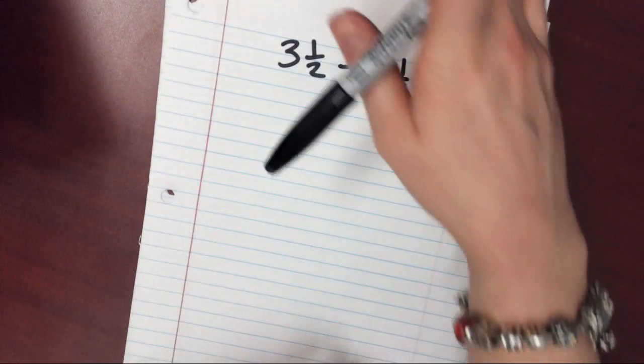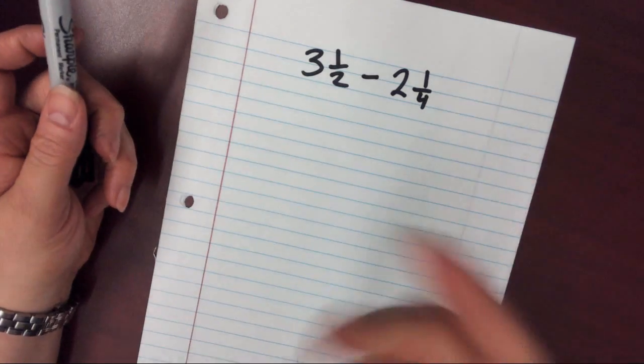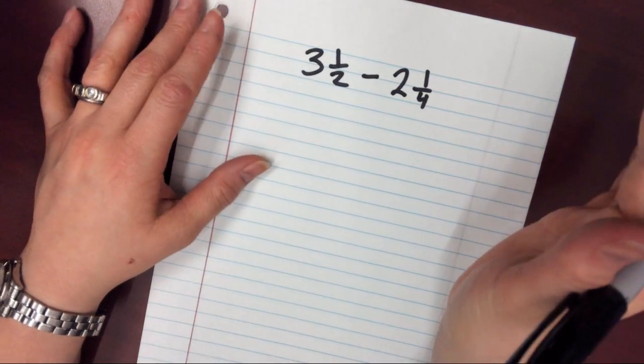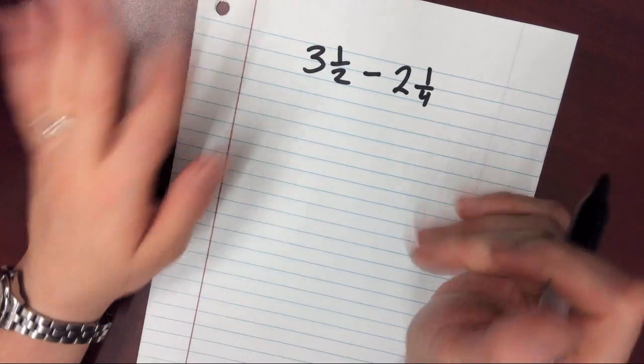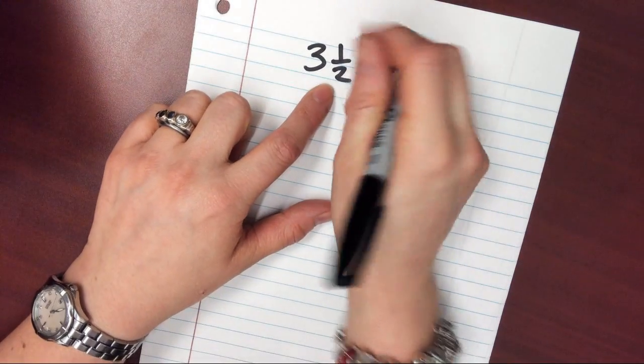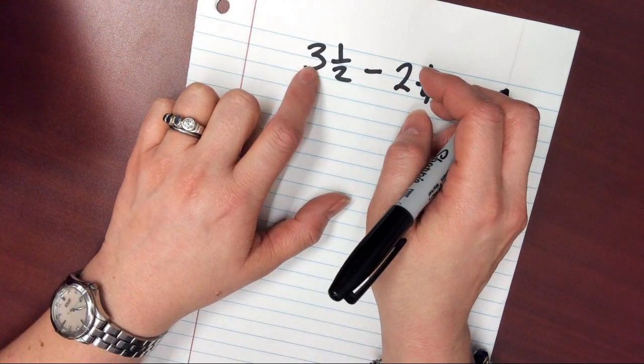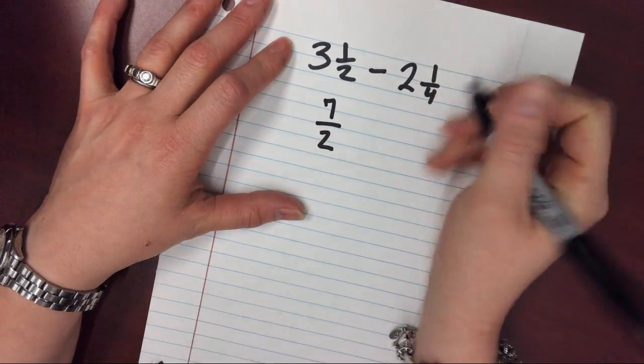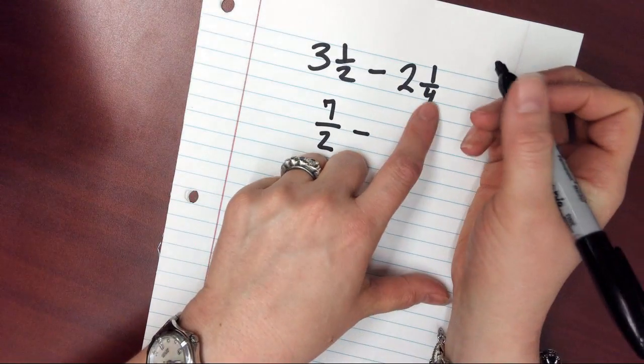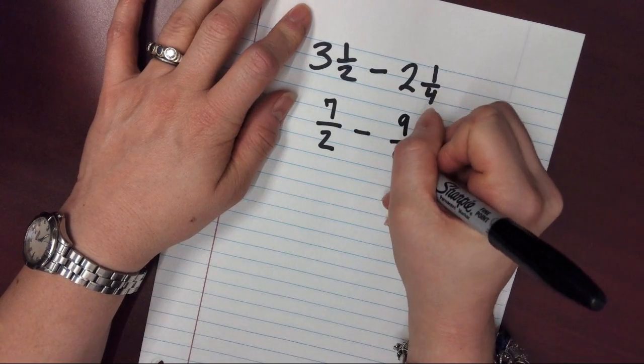So the first thing you do have to do for this is you do have to turn them into improper fractions, but fifth graders should be quick and snappy at that. And if your kiddo is not, if you're studying with them for their tests and they're finding that they're not, that's something you need to be working on. So to turn it into an improper fraction, we're going to take the 2 times the 3 and add the 1. So that's going to be 7, and then we're going to leave that over 2, minus 2 and 1 fourth is going to be 4 times 2 plus 1, which is 9 over 4.